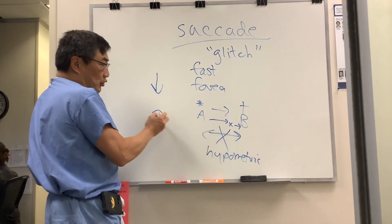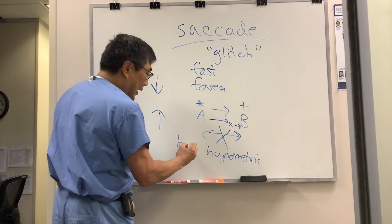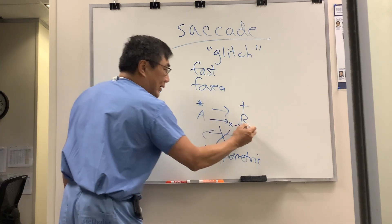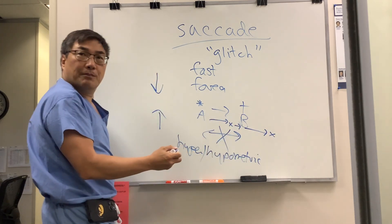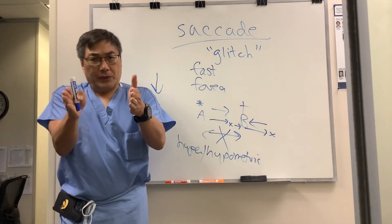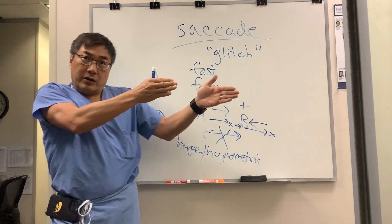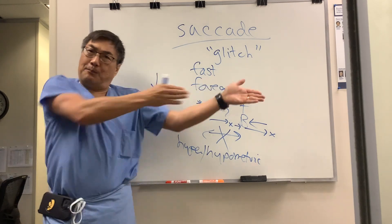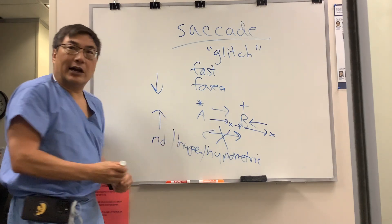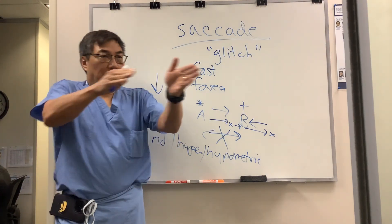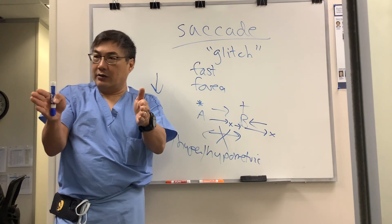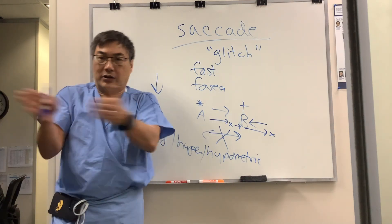Sometimes it's too much, and that is a hypermetric saccade, where instead of going from A to B, you overshoot past B and then come back to B. So it can look like a hypometric saccade with a catch-up, or it can be hypermetric, or you could have no saccade at all. You can pursue, but you can't execute a voluntary saccade — look at my finger, look at my nose — or even respond to a command like 'look to the left.'